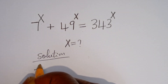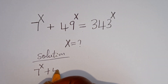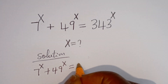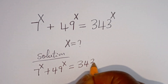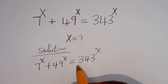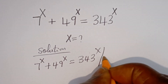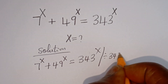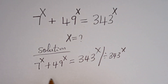We have 7 to the power of S plus 49 to the power of S is equal to 343 to the power of S. Now here, let's divide all through by 343 to the power of X.